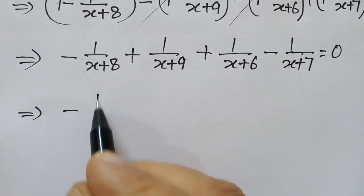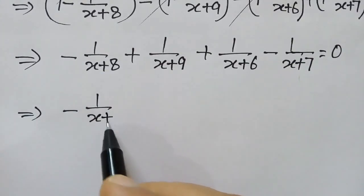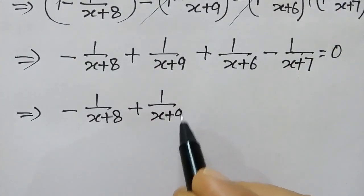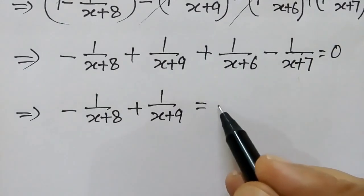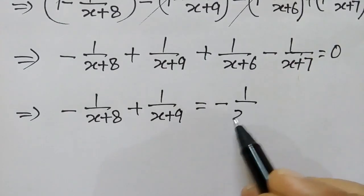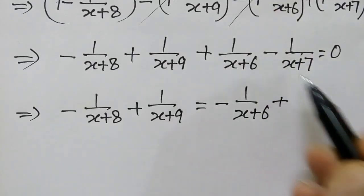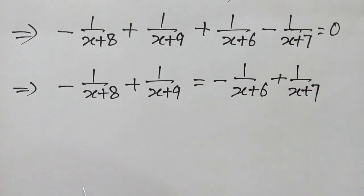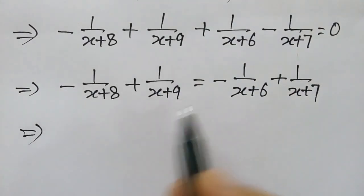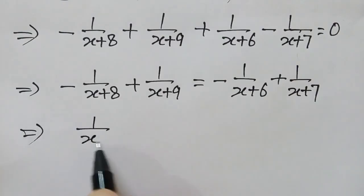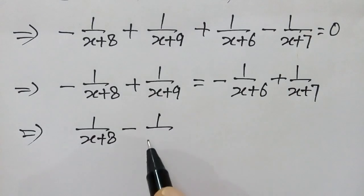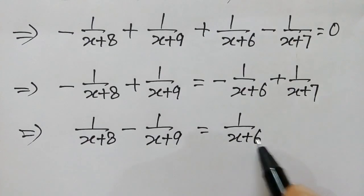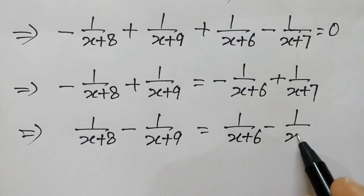Now, rearranging the terms and changing signs, we have: 1 over (x+8) minus 1 over (x+9) is equal to 1 over (x+6) minus 1 over (x+7).